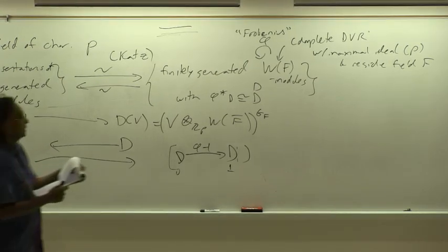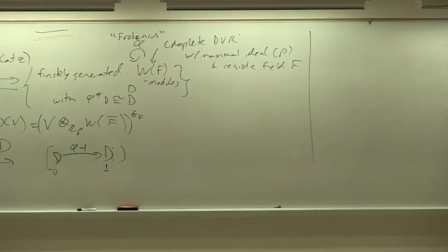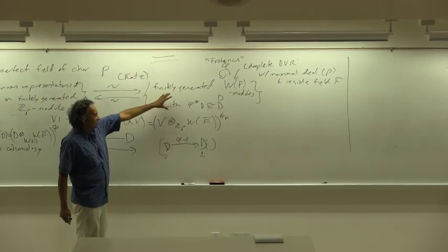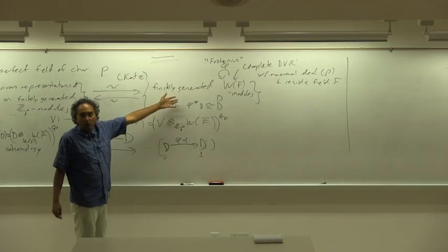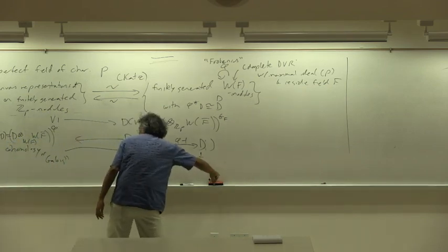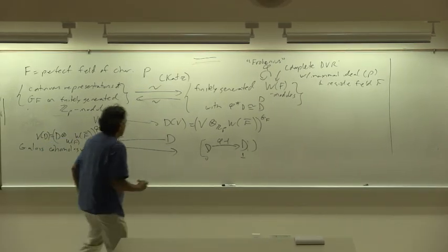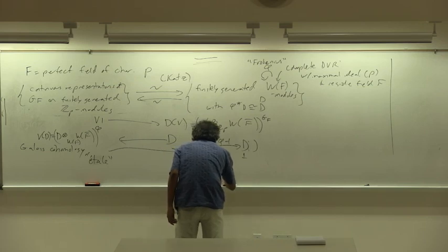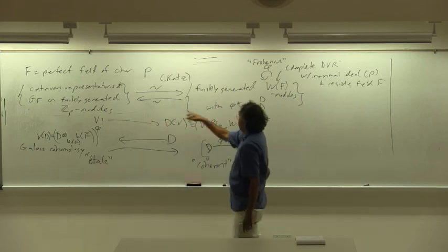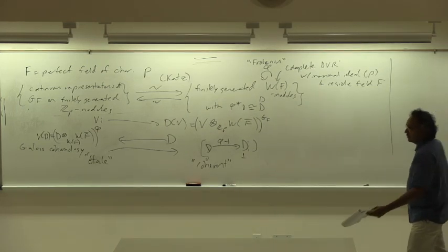So this somehow says that a Galois-theoretic construction — representations and Galois cohomology — is related to what you might call a coherent cohomology construction. I'm going to think of this as the Galois side, or better, the étale side; and this is like a coherent cohomology type of side — the coherent side. So I'm going to talk about various ways to soup this up, extensions at various levels of generality.